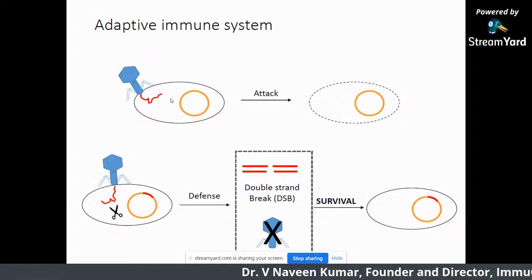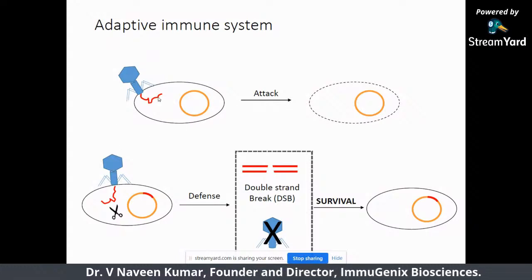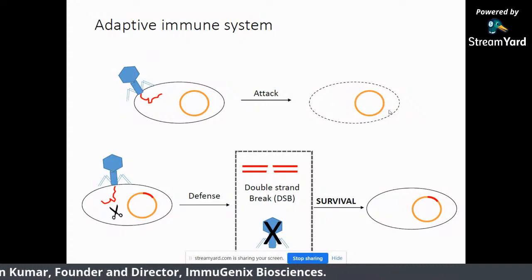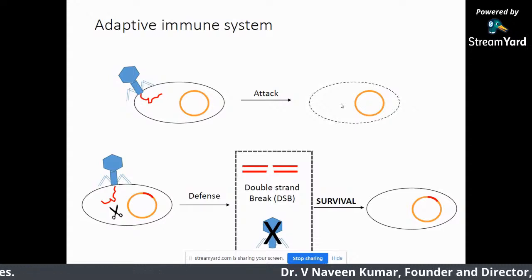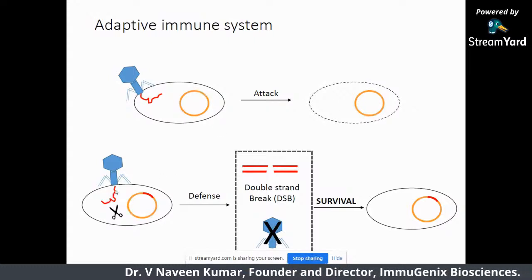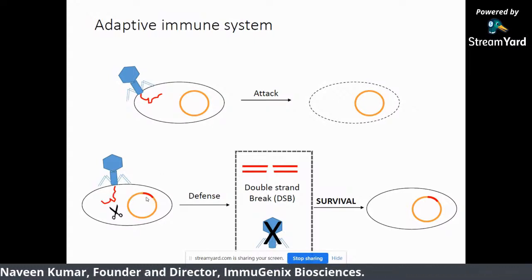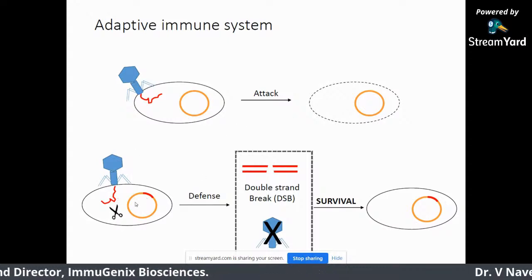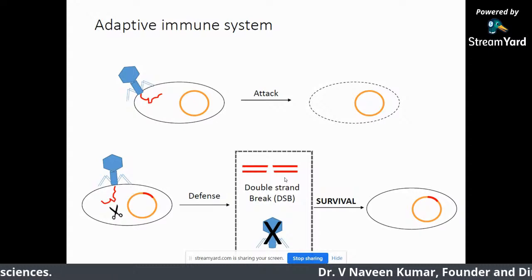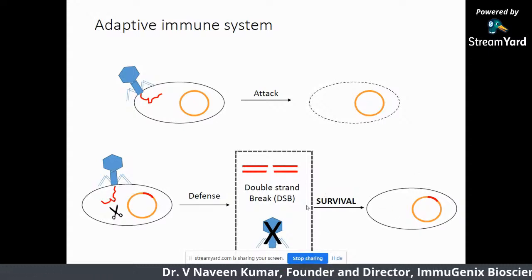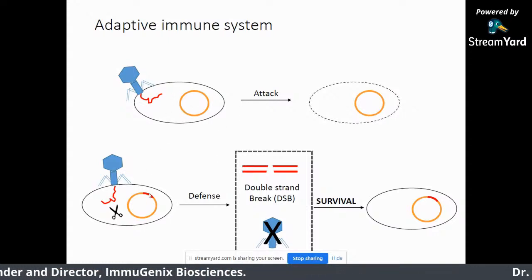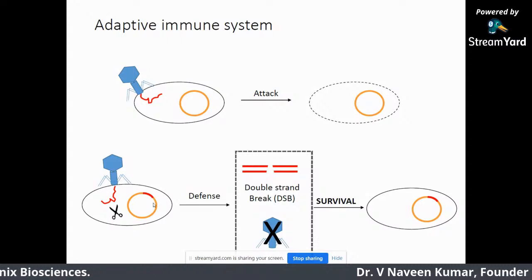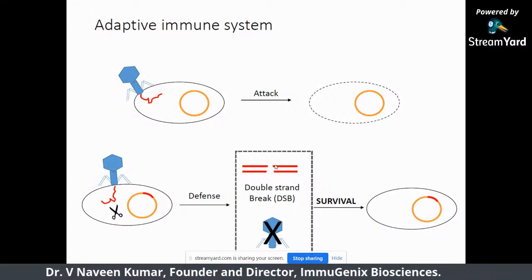The first time a phage infects, the bacterium may die or survive based on the mechanism of viral infection — lytic or lysogenic cycles. A part of the phage genome enters into the CRISPR-Cas system. The next time the same phage infects, what happens is it cuts the phage genome into a double-strand break, so the bacteria survive and the phage can no longer cause infection. So the first infection creates a memory, and the second time the phage infects, they break the phage DNA or viral RNA into pieces.